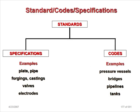Standards are divided into two: specifications and codes. Specifications cover items such as plate, forging, casting, valves, and electrics. Codes cover pressure vessels, bridges, pipelines, and tanks. The code may not contain all information, so you have to follow the referenced standard - for example for plate or forging specifications.